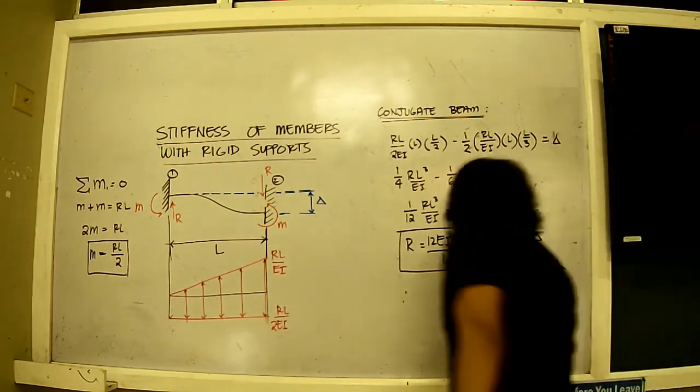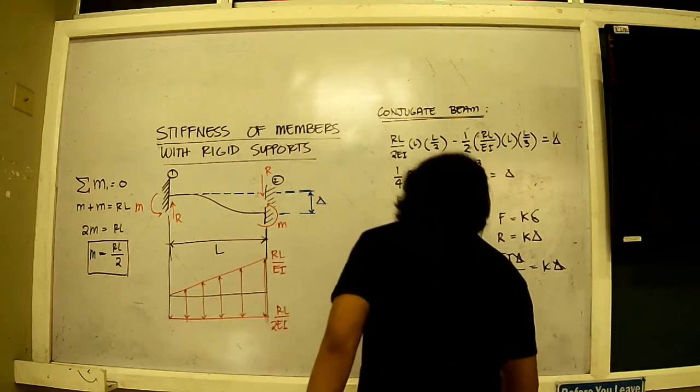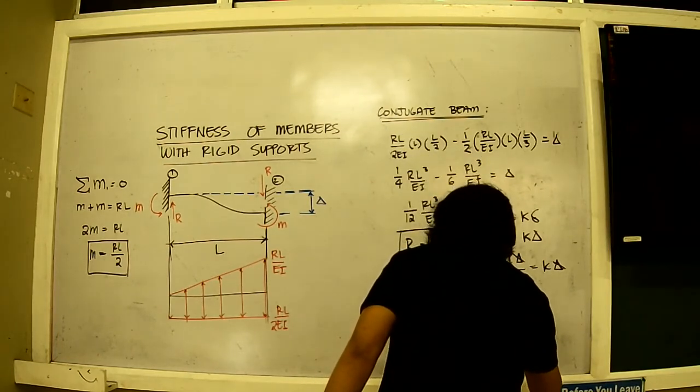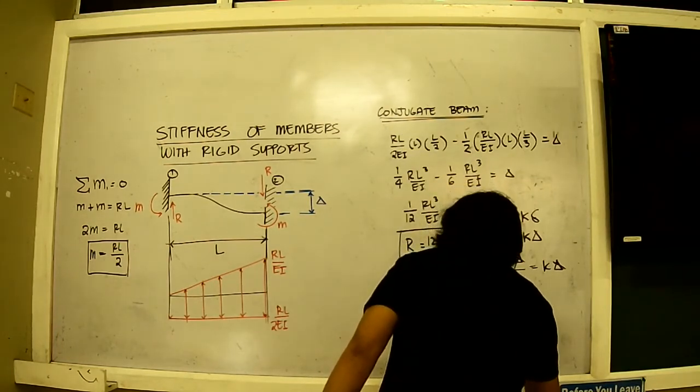This cancels out and we shall have the expression for K which is equal to 12 EI over L cubed.